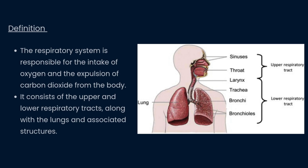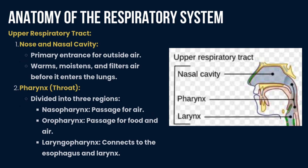Starting with the anatomy of the respiratory system, we first look at the upper respiratory tract. The nose and nasal cavity serve as the primary entrance for outside air — they warm, moisten, and filter air before it enters the lungs. Second comes the pharynx, that is the throat, divided into three regions: nasopharynx, oropharynx, and laryngopharynx.